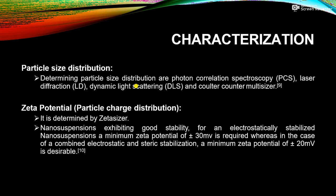The second characterization method is zeta potential. Zeta potential means we are going to find out the particle charge distribution. Zeta potential can be determined with the help of a special type of instrument which is called the zeta sizer.